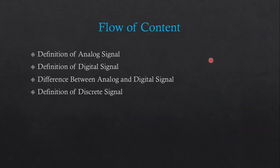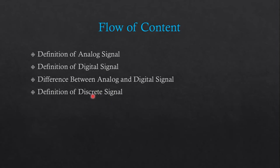Starting with the Flow of Content. We already studied about what is Signal and what is System in our first lecture, along with the use of Signal and System in everyday life and different classification of Signal and System. In today's lecture, we are going to study the Definition of Analog Signal, Definition of Digital Signal, the Difference between Analog and Digital Signal, and the Definition of Discrete Signal.